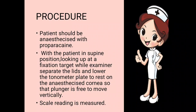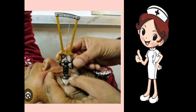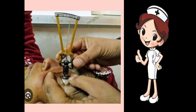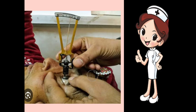The procedure: the patient should first be anesthetized with proparacaine — we put proparacaine drops inside the patient's eye. With the patient in a supine position, looking up at a fixation target — such as a ceiling target, fan target, or the fingertip of the patient's own hand — the examiner holds both eyelids of the patient. With the other hand, the examiner places the tonometer tip on the cornea of the patient.